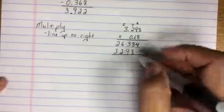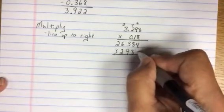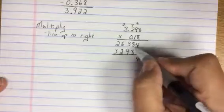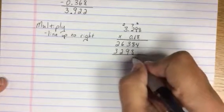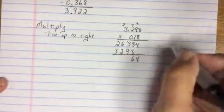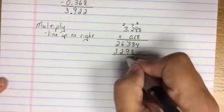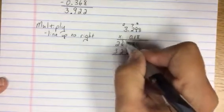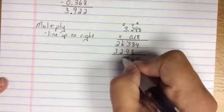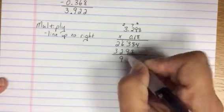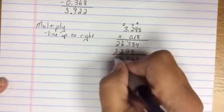I add down. So 4 plus 0 is 4. 8 plus 8 is 16. Carry my 1. 1 plus 3 is 4. Plus 9 is 13. Carry the 1. 6 plus 1 is 7. Plus 2 is 9. Nothing to carry. 2 plus 3 is 5.